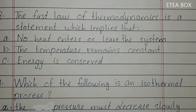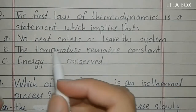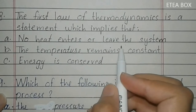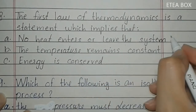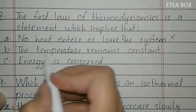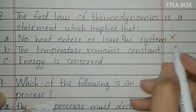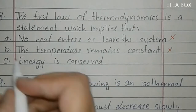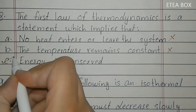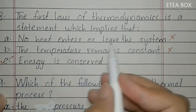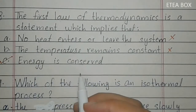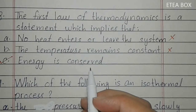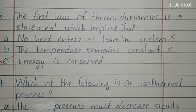Eighth MCQ: the first law of thermodynamics is a statement which implies — option A (no heat enters or leaves) is incorrect; option B (temperature remains constant) is incorrect. The correct answer is that energy is conserved. The first law of thermodynamics states that energy is conserved. So here option C is correct.